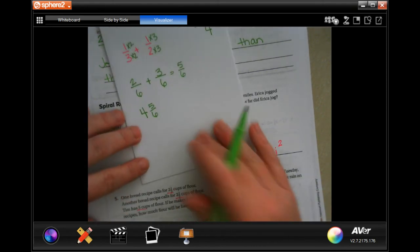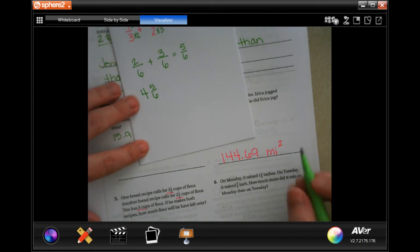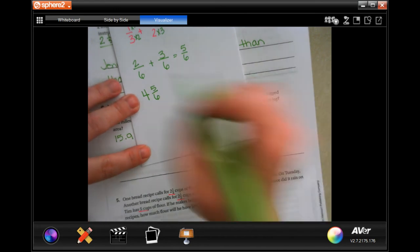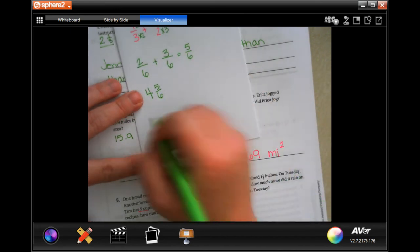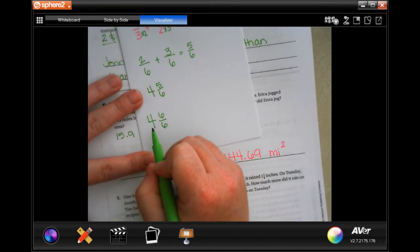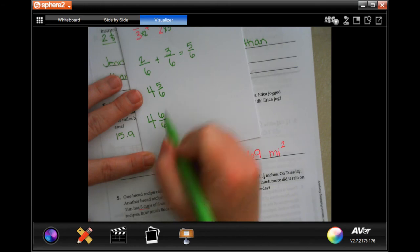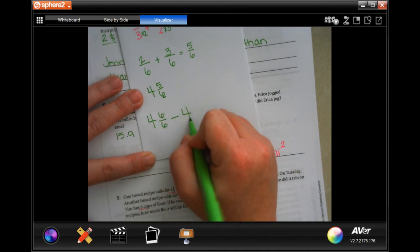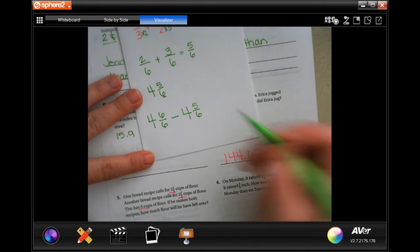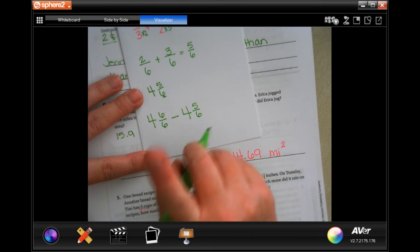He has five cups. So, I'm going to make that four and six over six. So, I borrowed one from the five and I made it into six over six so that I can subtract this with my denominator being a six. I needed a common denominator and six over six is equal to one.